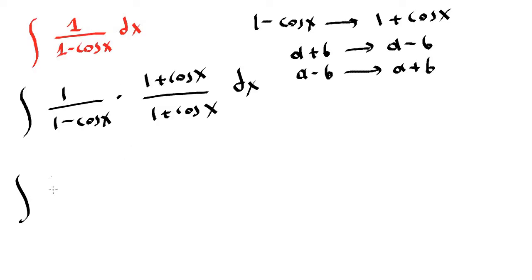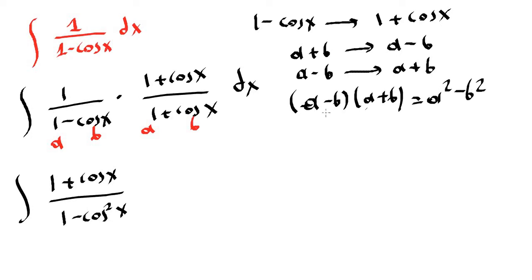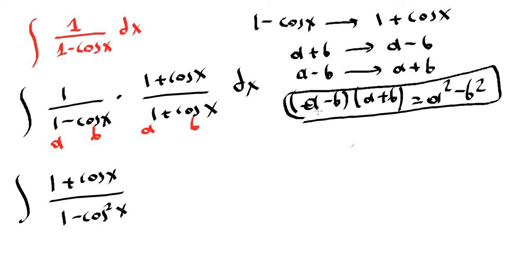...cosine of x, which is 1 plus cosine of x. On the bottom we obtain 1 minus cosine squared of x, because this is the difference of two squares — an a term and a b term — and a minus b times a plus b equals a squared minus b squared by the difference of two squares. Now we have 1 minus cosine squared of x on the denominator.